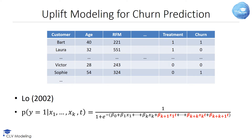A second and more elegant direct approach for uplift modeling makes use of logistic regression and was introduced by Victor Lowe in 2002. The proposed methodology groups the treatment and control groups in one development sample, and incorporates a treatment dummy variable which indicates treatment or control group membership. In the example dataset shown, the treatment dummy variable is assigned a value of 0 for the control group and a value of 1 for the treatment group. Lowe's approach then includes the treatment indicator, as well as all other variables and all possible interaction terms, as indicated in red, in the logistic regression model.